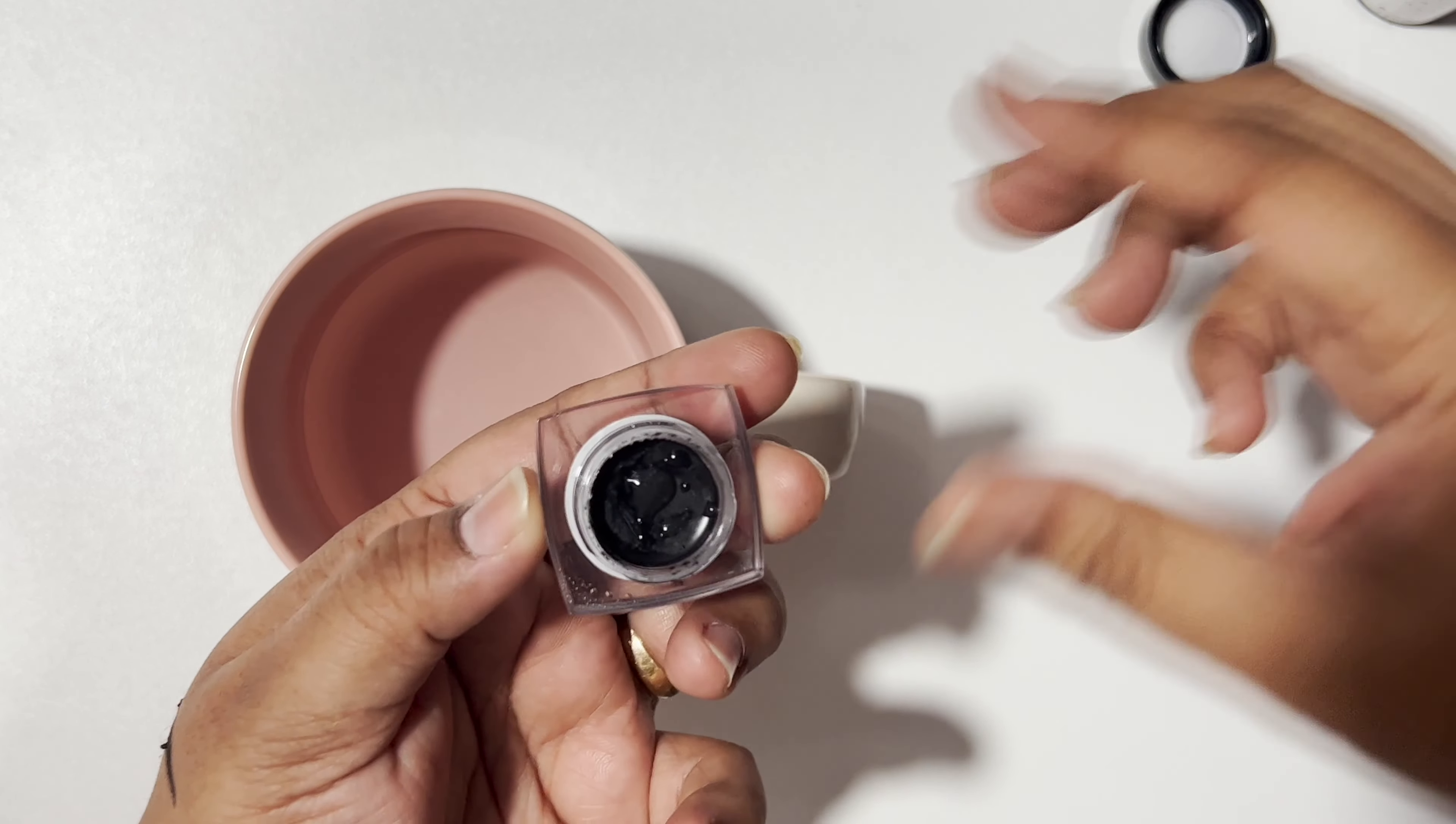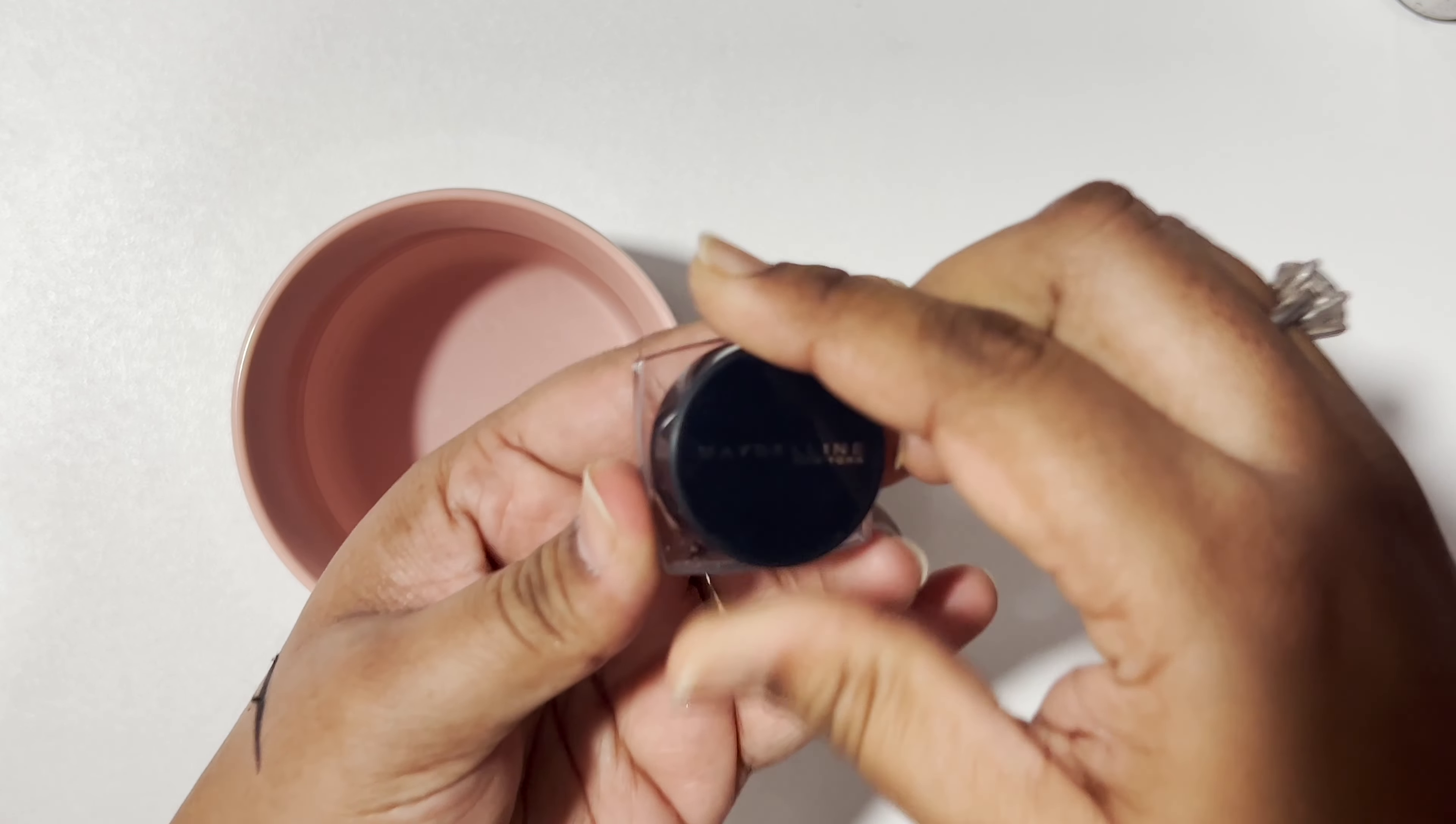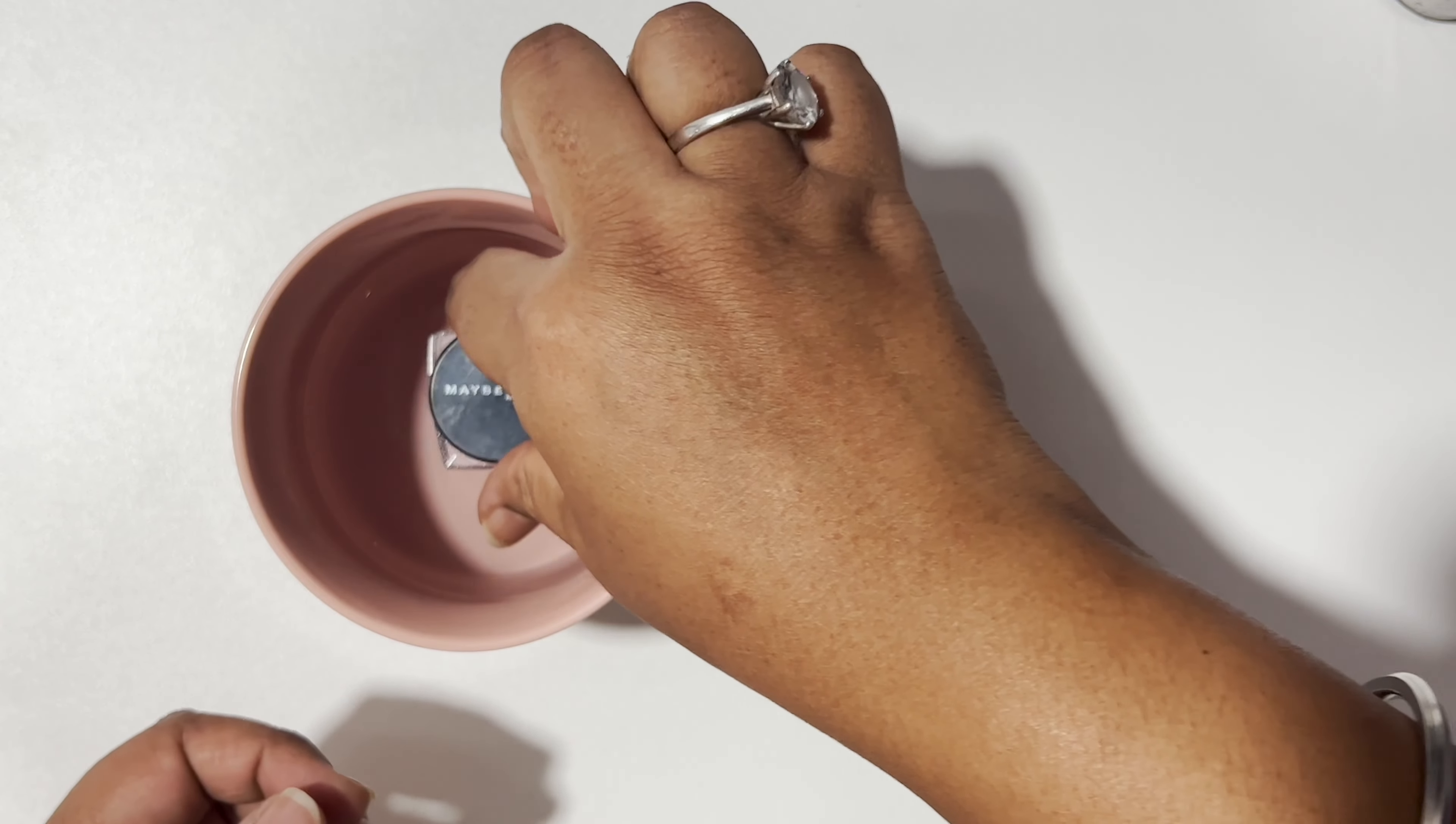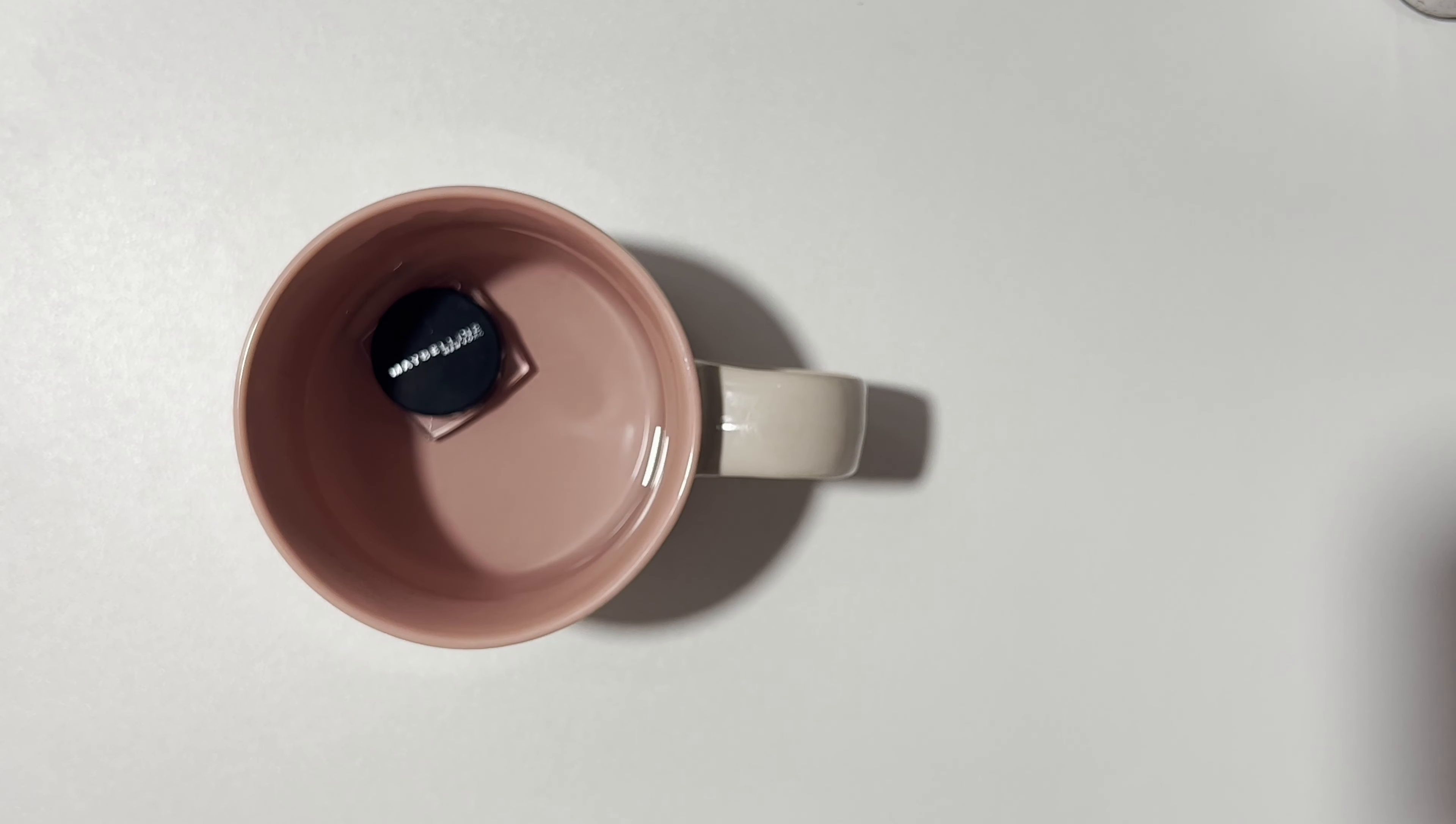Now I'm going to close the lid of this eyeliner really tight and immerse it into the hot water for a good five to ten minutes so that it merges well. The hotter the water, the more easily the eyeliner melts down.